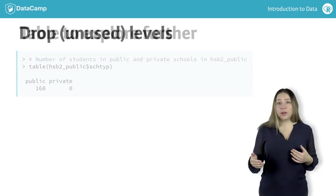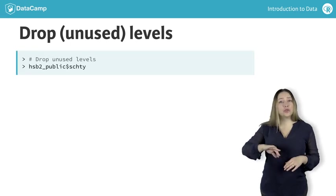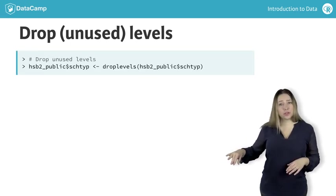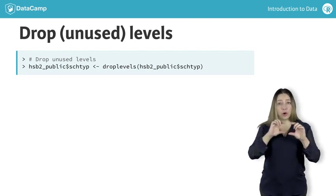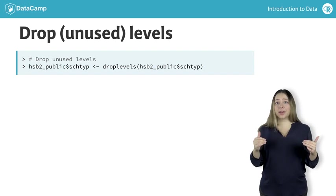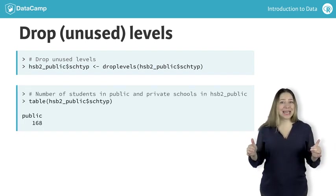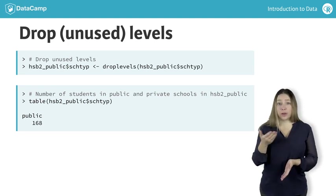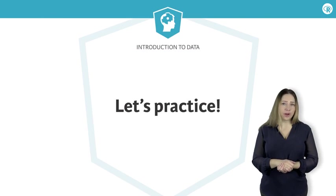In order to get rid of the unused levels showing up in our summaries and graphs, we can explicitly drop them with the droplevels function. We apply this function to the school type variable and overwrite that variable in the data set. If we now make another frequency table for this variable, we can see that the unused level no longer shows up in the summary. Now you'll practice filtering and handling factors with a different categorical variable.